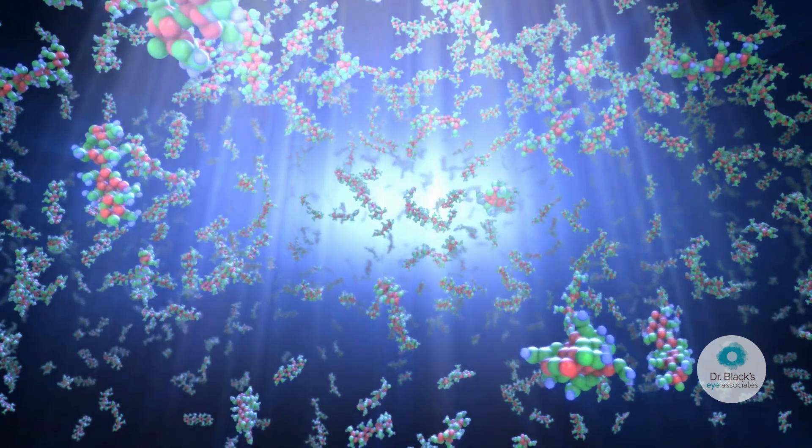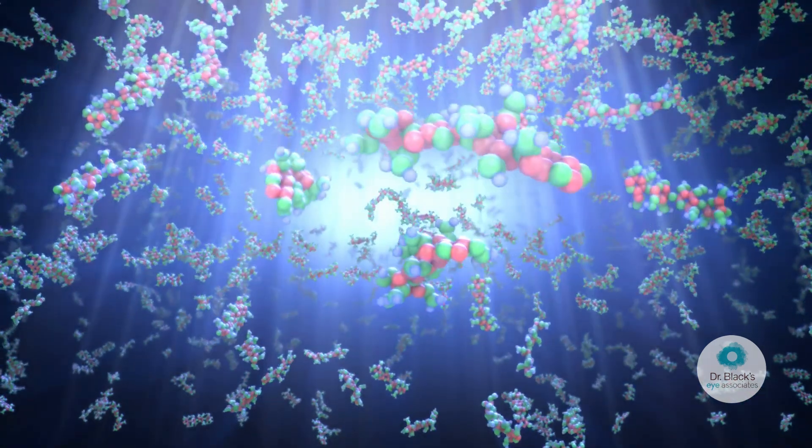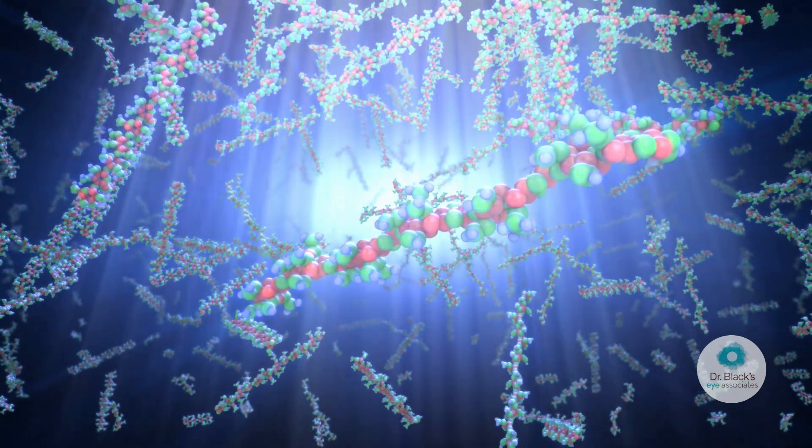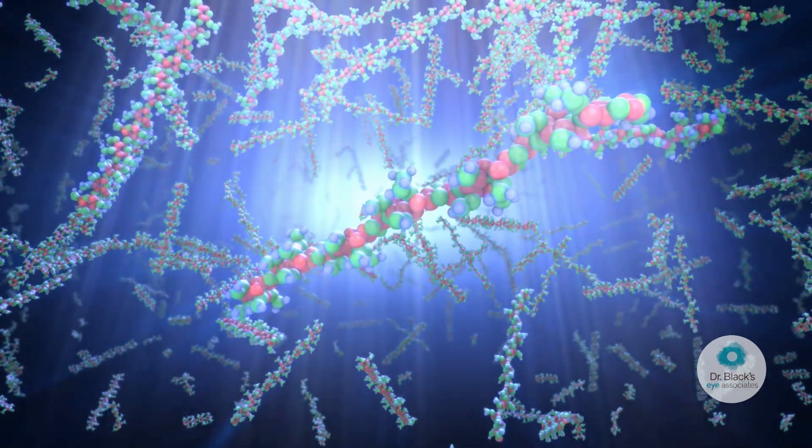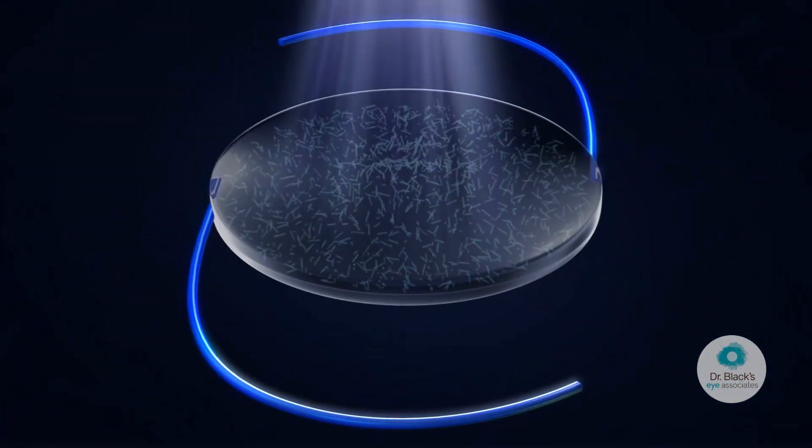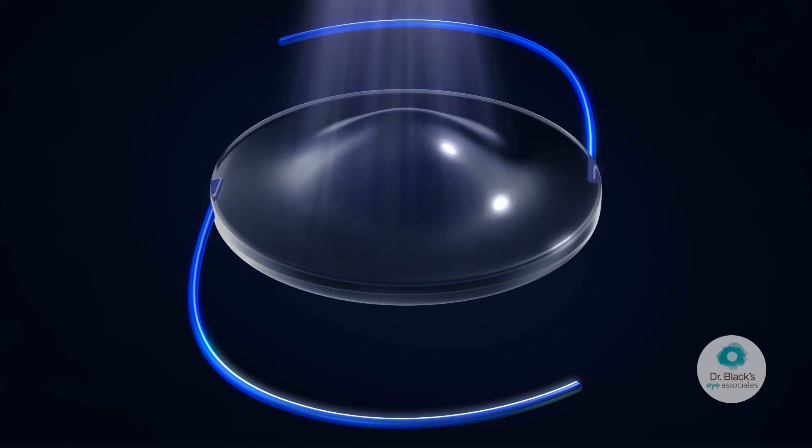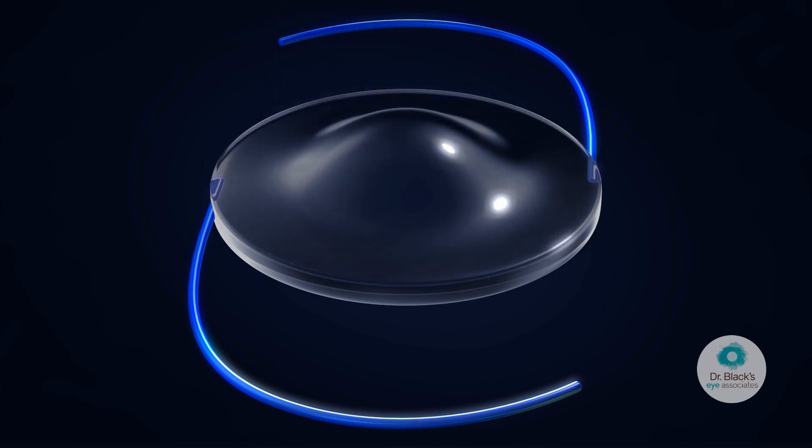When light is directed to a specific area of the lens, macromers in the path of the light attach to the ends of other macromers, forming polymers. The remaining unreacted macromers physically diffuse into the exposed area, causing a highly predictable change in the shape and refractive power of the lens.